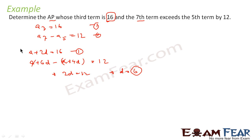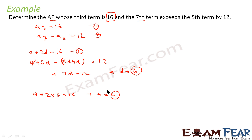Now I can use d in the first equation to get the value of a. a plus 2 times 6 is equal to 16, or a is equal to 4. I have the value of a and d — a is 4 and d is 6. I have everything. Now I have to find the AP.